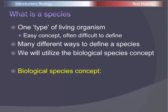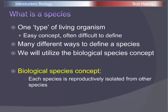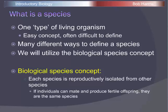The biological species concept defines a species based on reproductive isolation. If two organisms can mate and produce fertile offspring, we say they are the same species. But if they cannot mate, or if they mate and produce something sterile, then we say they're two different species. So the concept has to do with who can mate and who can't. Members of a species can mate with each other but not with members of any other species, giving each species its own separate gene pool.